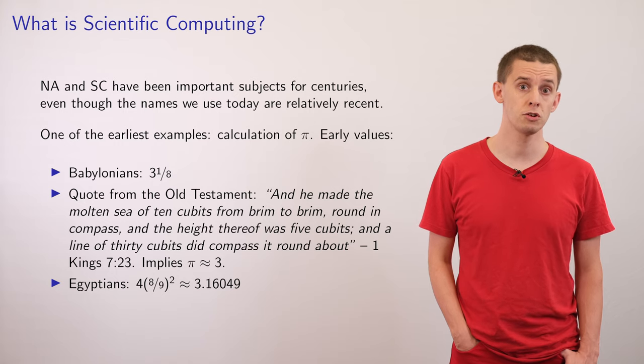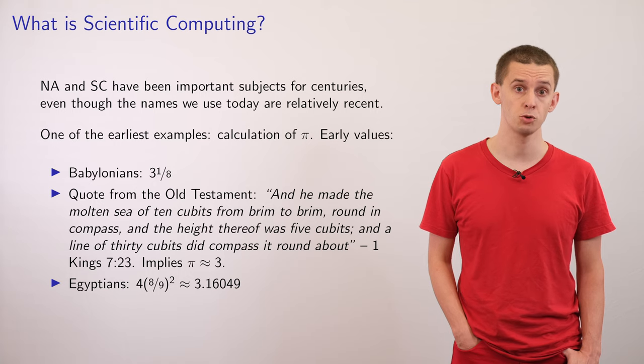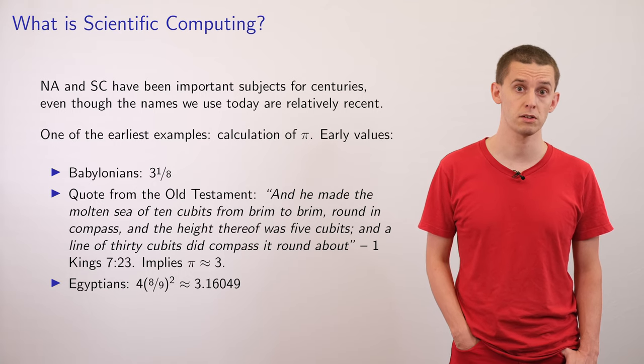The Egyptians use a value of pi equal to four times eight-ninths squared, which works out to about 3.16. And you might ask, well how did they come up with this value?